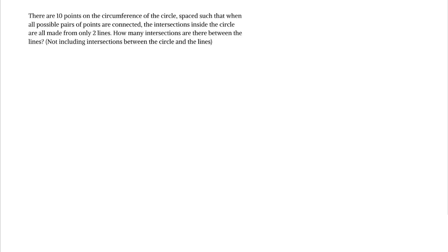Here's the problem: there are 10 points on the circumference of the circle spaced such that when all possible pairs of points are connected, the intersections inside the circle are all made from only two lines. How many intersections are there between the lines, not including intersections between the circle and the lines? Here's the solution without the trick.